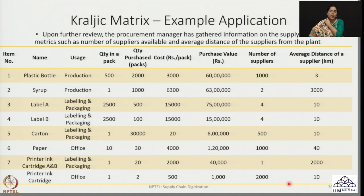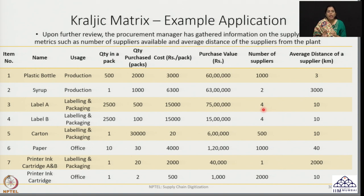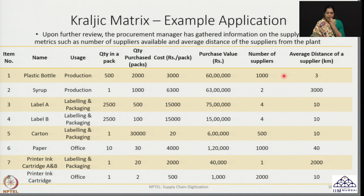We can now create a Kralyic matrix. One approach is to define a metric representing purchase value — the profit impact — and a metric representing supply risk. For the profit impact scale, I have used 0 to 10, where 0 represents low impact and 10 represents high impact. For supply risk, I have used a scale of 1 to 10. It would be preferable to use the same scale for both dimensions.